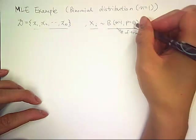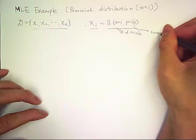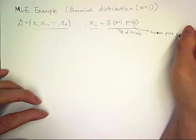And the p, theta, is a success probability in each trial.